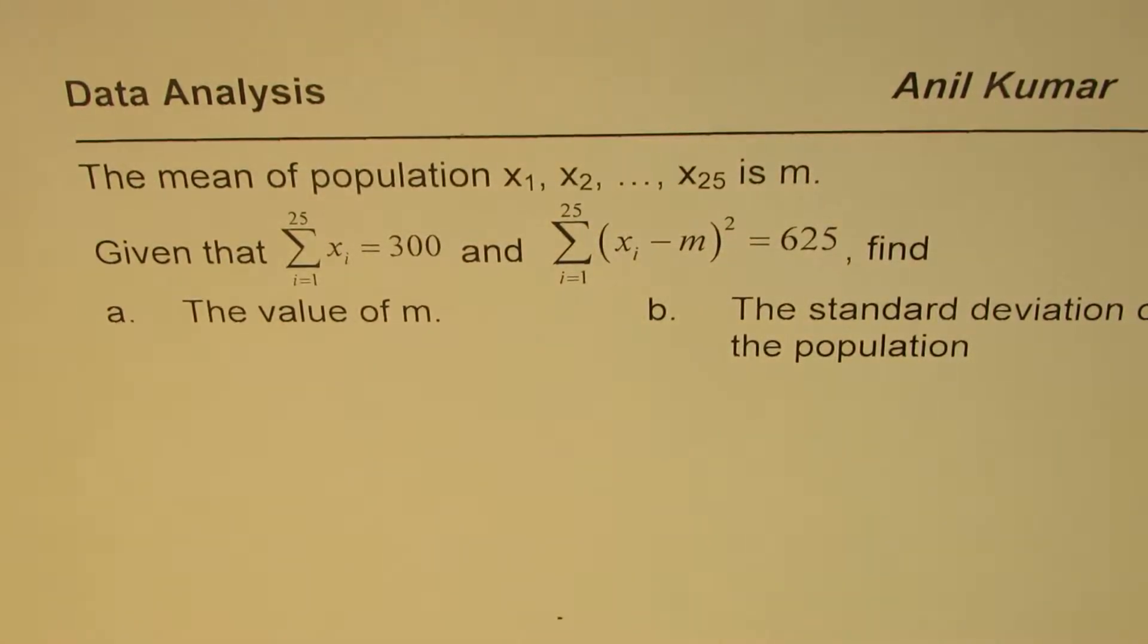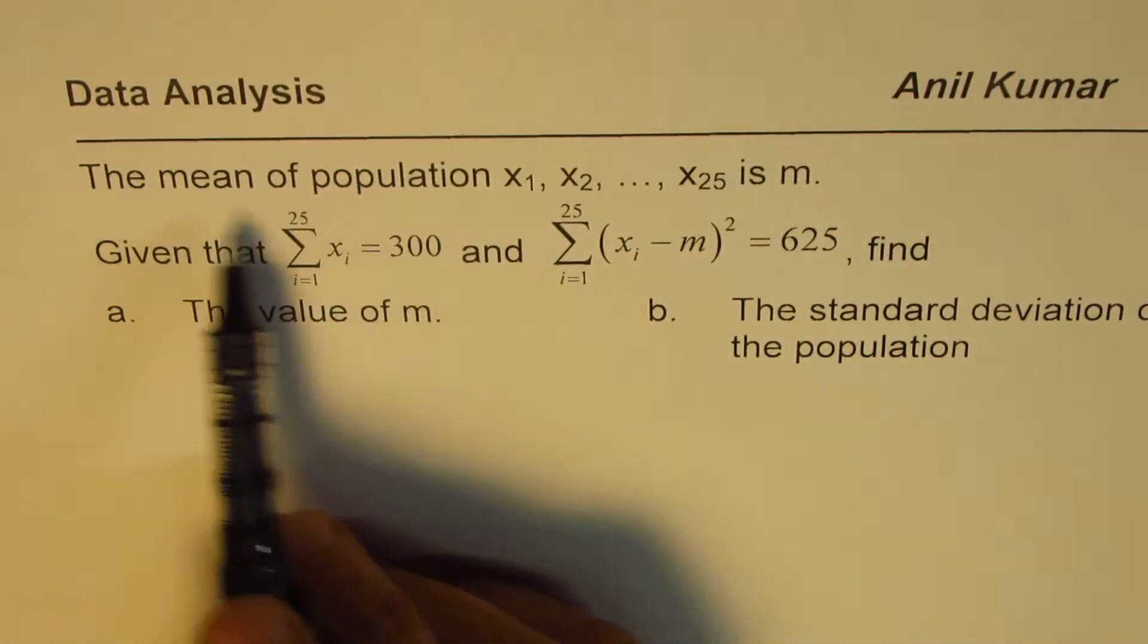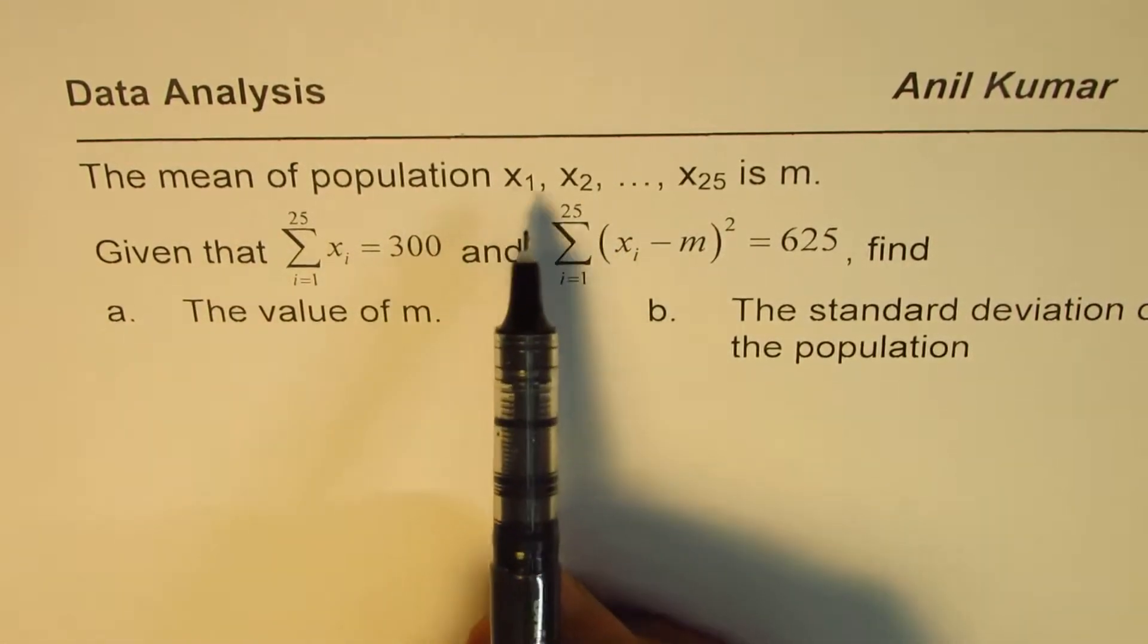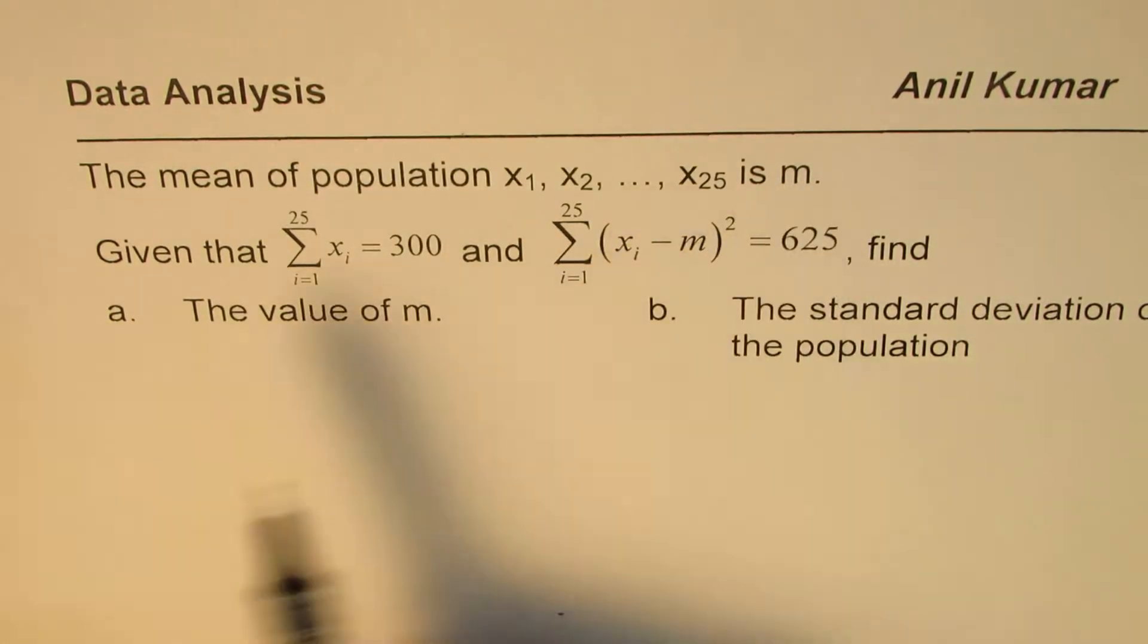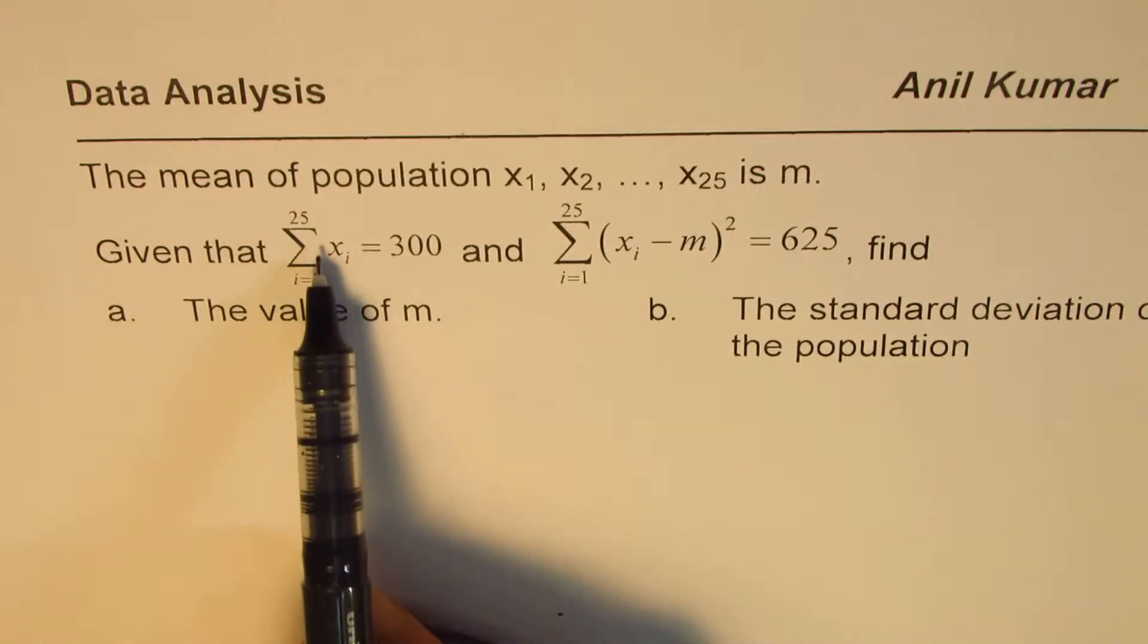I'm Anil Kumar sharing with you a question from a previous test paper on data analysis. The mean of population x₁, x₂, and so on till x₂₅ is m. Given that the sum of xᵢ where i moves from 1 to 25 is 300.